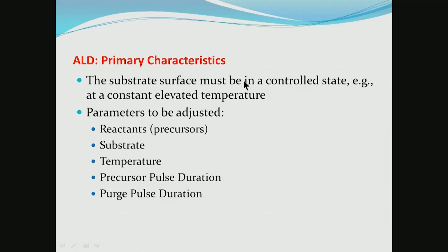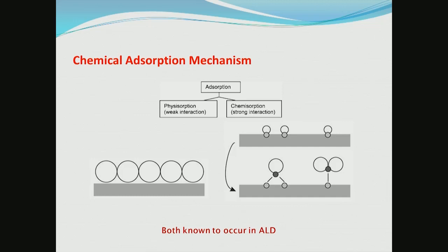The substrate surface must be in a controlled state, for example at a constant elevated temperature. The parameters to be adjusted are the chemical nature of the reactants or precursors, the nature of the substrate, substrate temperature, precursor pulse duration, and purge pulse duration — all specific to a particular process. ALD involves the chemical adsorption of precursors on the surface; both physical and chemical adsorption are involved in a typical ALD process.